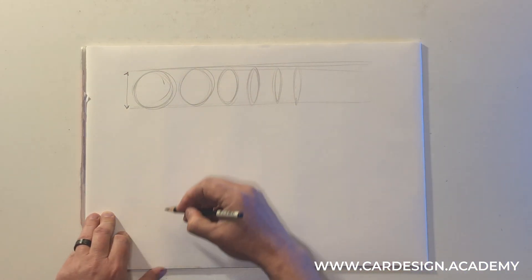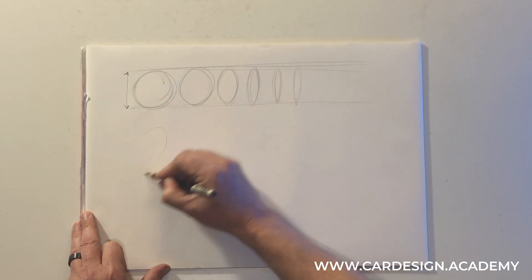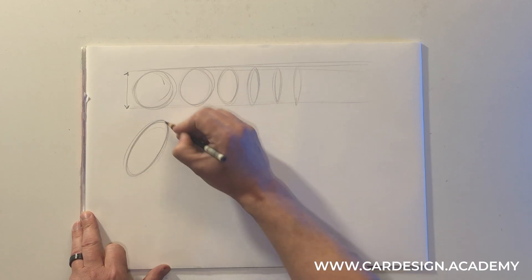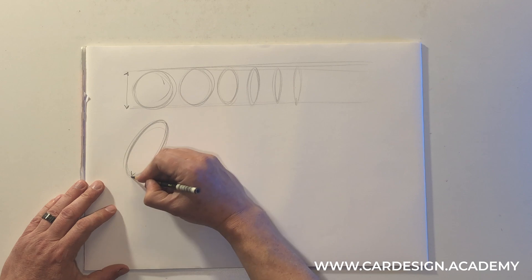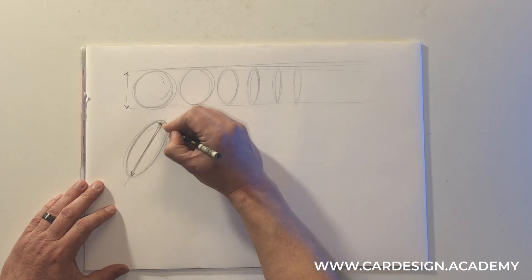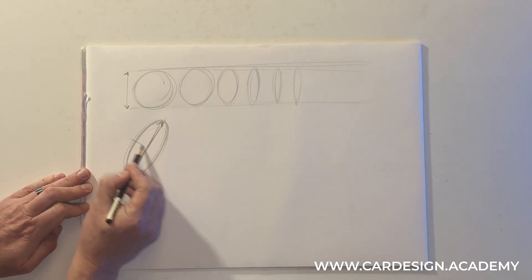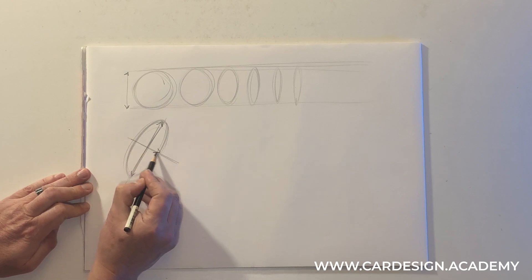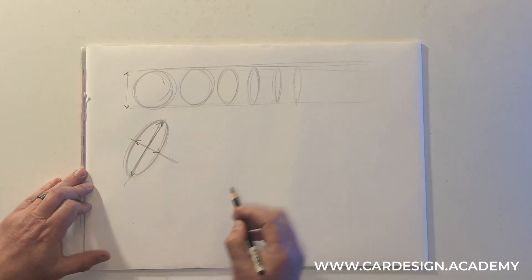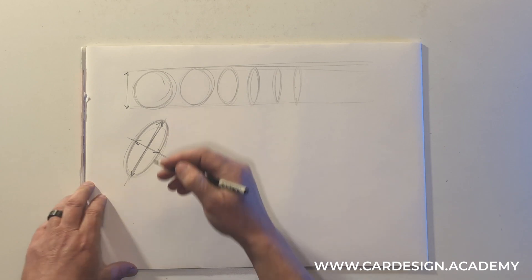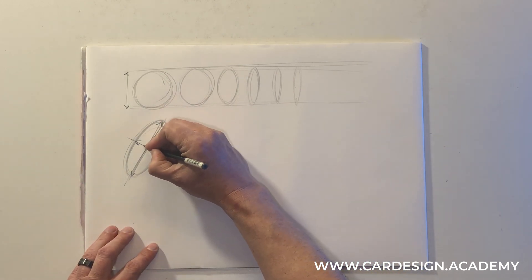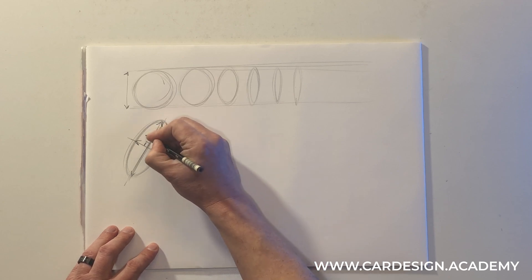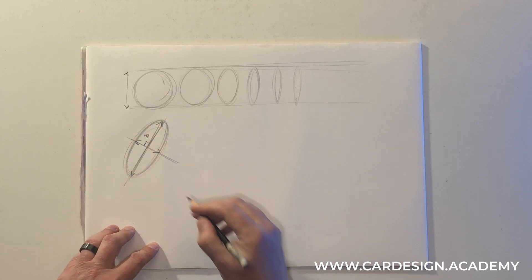Now ellipses have two axes, right? There's the major axis which is the longest part of the ellipse, and there's the minor axis which is the shortest part of the ellipse. No matter which perspective we're using, the major axis is always 90 degrees to the minor axis.